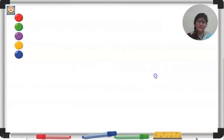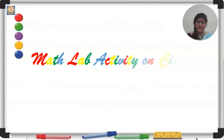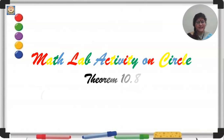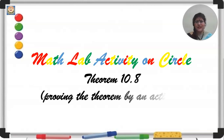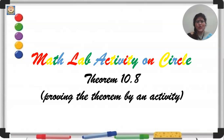Hello students, welcome to this MATLAB activity. We will be proving theorem 10.8 from circles. You have already done this theorem, but today we will be revising it by a different method — through a MATLAB activity. The statement of the theorem is: the angle subtended by an arc at the center is double the angle subtended by the same arc at any other point on the circle. Let us start with the MATLAB activity based on this theorem.